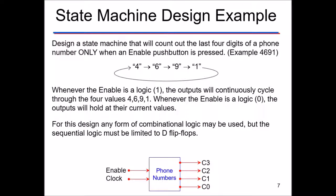Let's say I want to design a circuit that displays the last four digits of a phone number — for example, 4691. These are just random numbers. I want to design a circuit that cycles through these numbers as long as an enable switch is set to one. You can do it with a state machine, and I'm going to draw a state graph showing how to get it to cycle through these four states and output 4691.